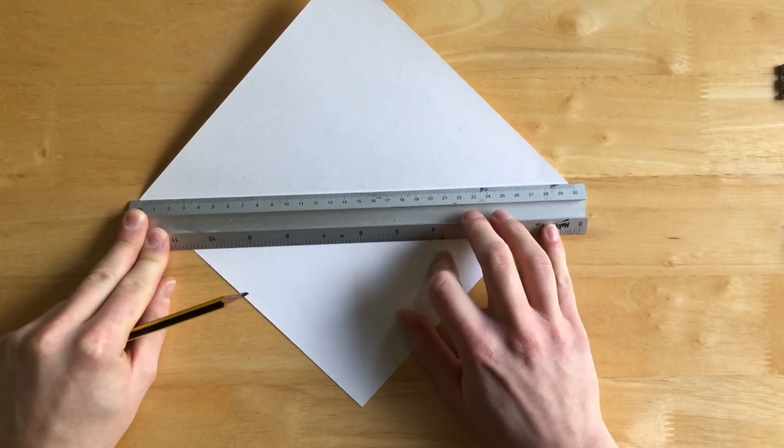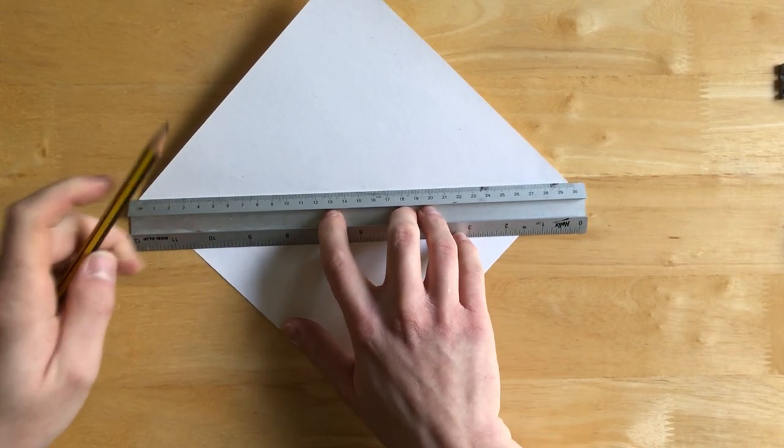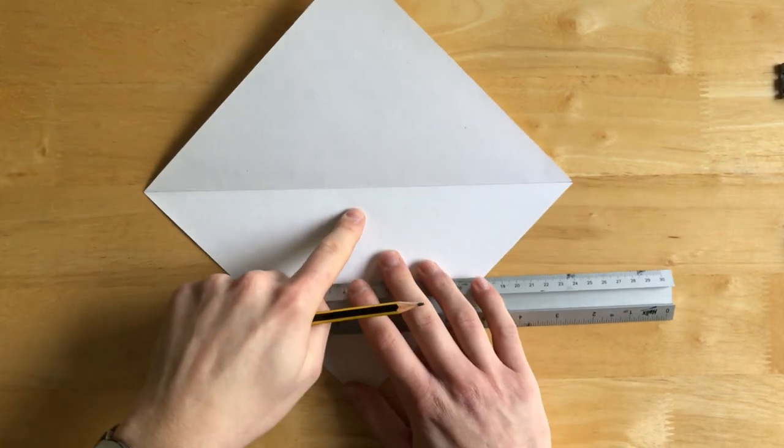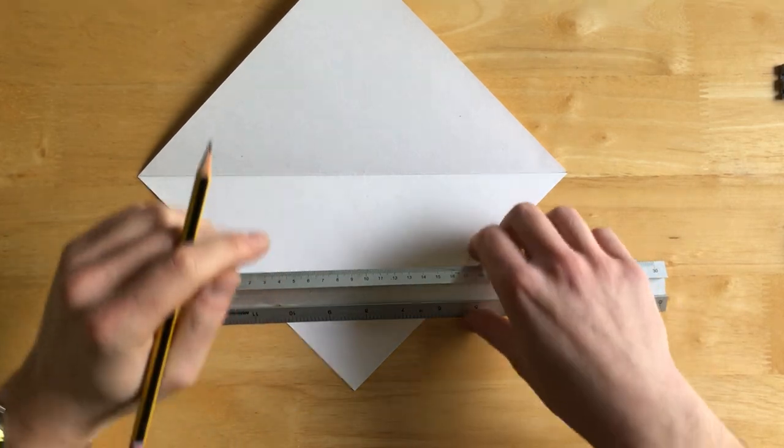And when you're happy that the corners are touching with the ruler, get your pencil and draw a nice thin line, a light line, not a heavy line, just a light line like this across the ruler.